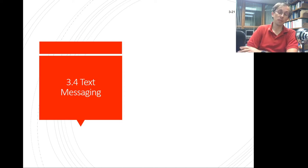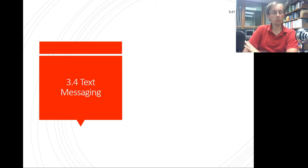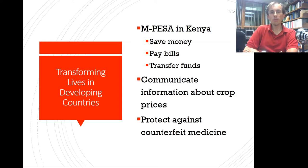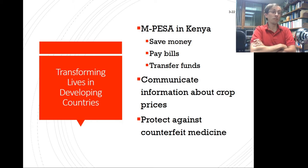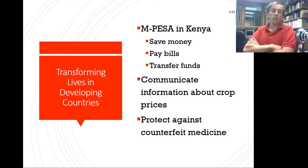Text messaging is something we all use to some extent. As an intermediate technology still necessary in various countries, text messaging is critical where internet infrastructure is lacking. The book discusses M-Pesa in Kenya — a service to help save money, pay bills, and transfer funds, probably because financial networks in rural areas aren't as sophisticated. It also helps communicate crop price information and protect against counterfeit medicines.